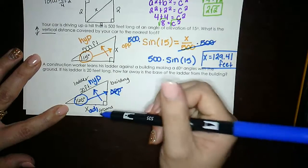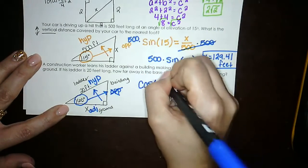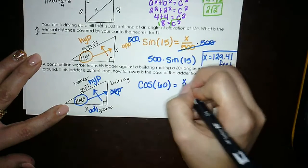Which trig function uses adjacent hypotenuse? Cosine. Angle goes next to that, adjacent over hypotenuse.